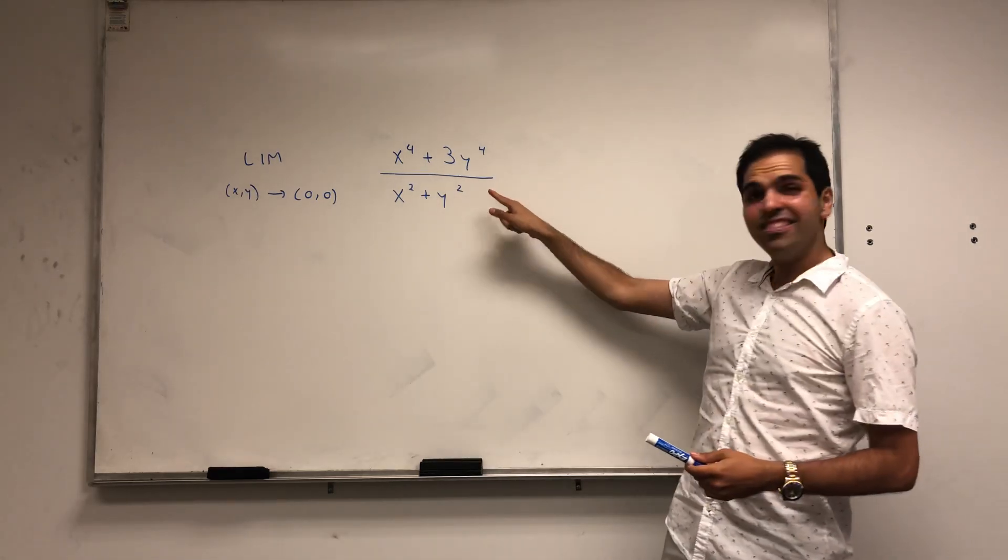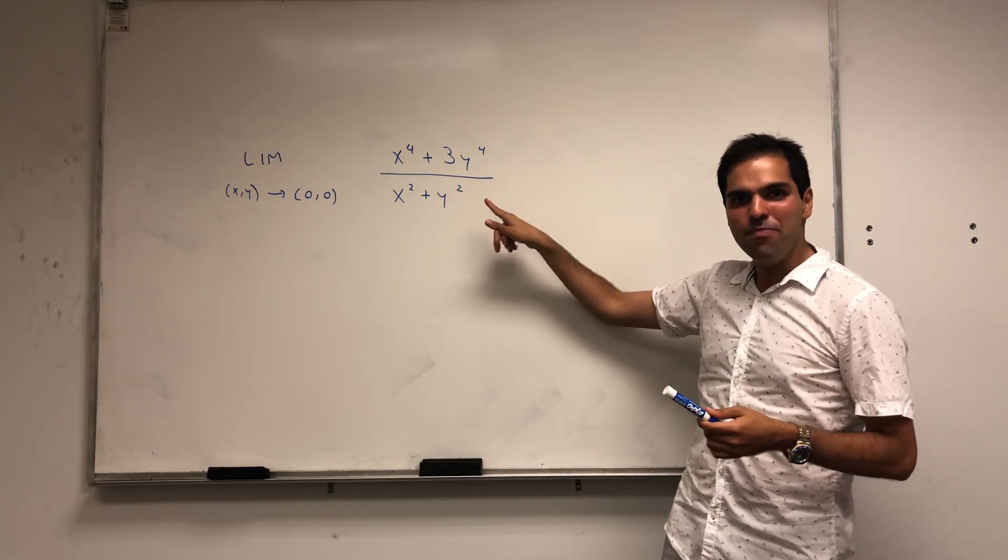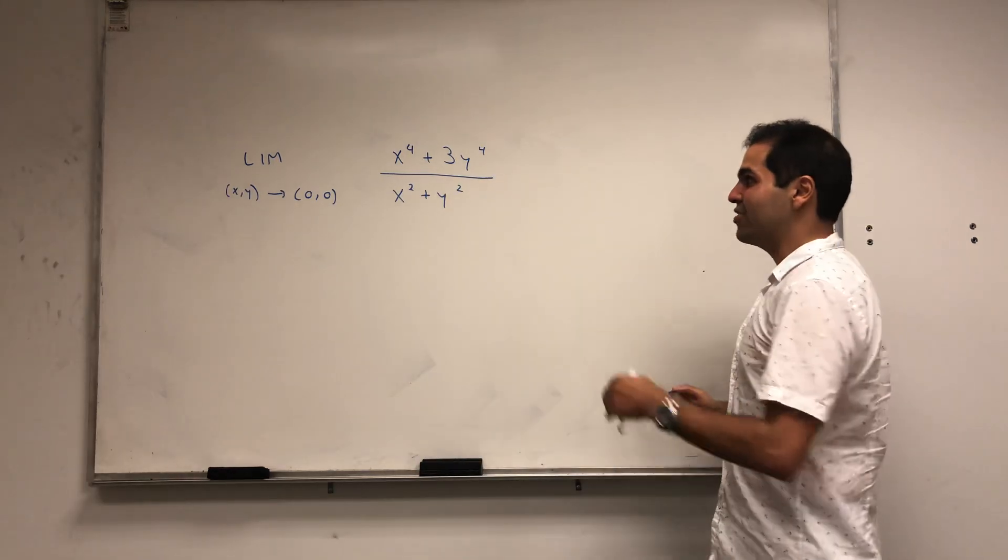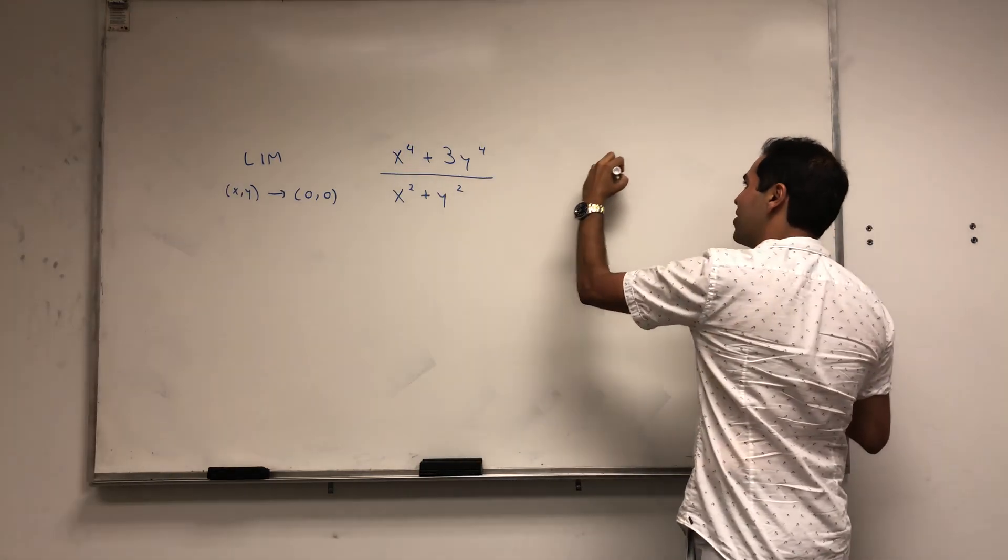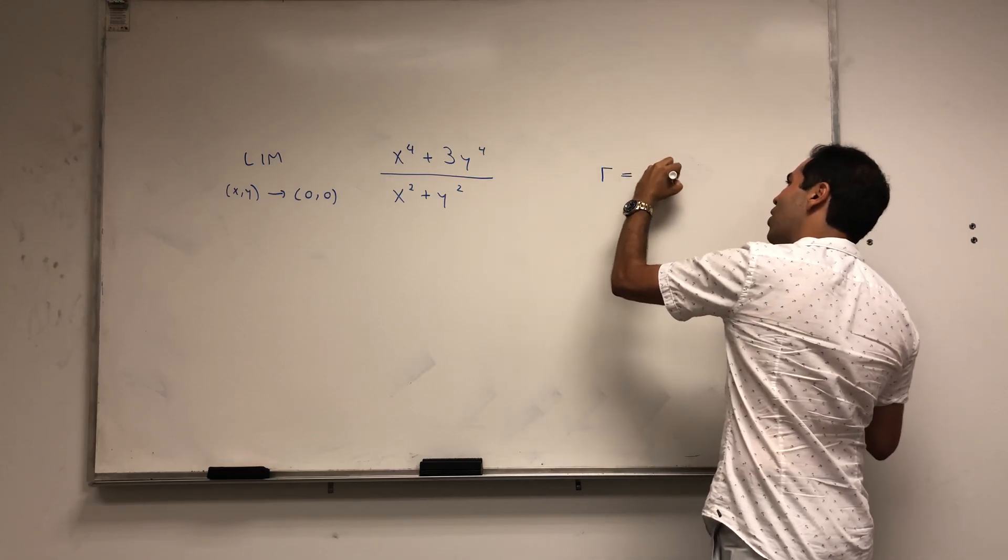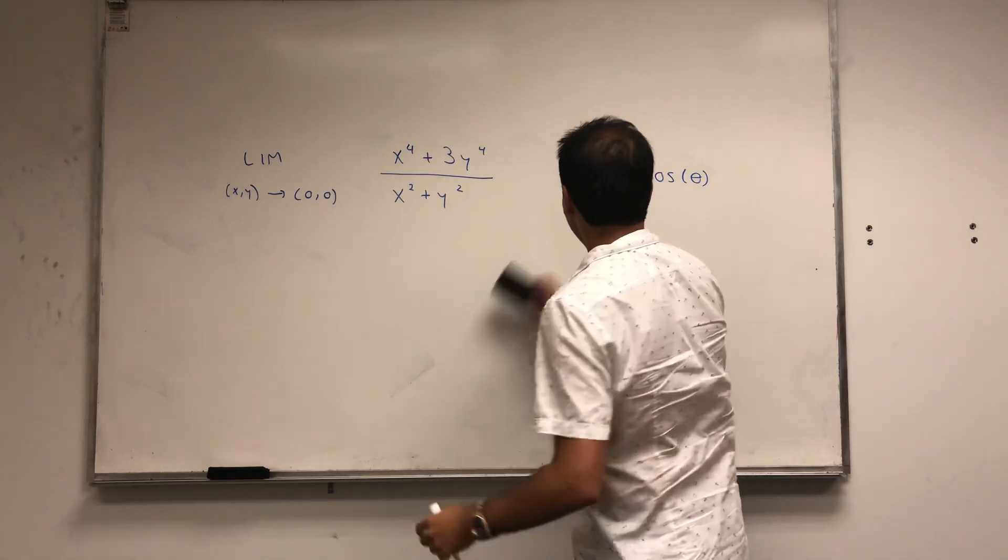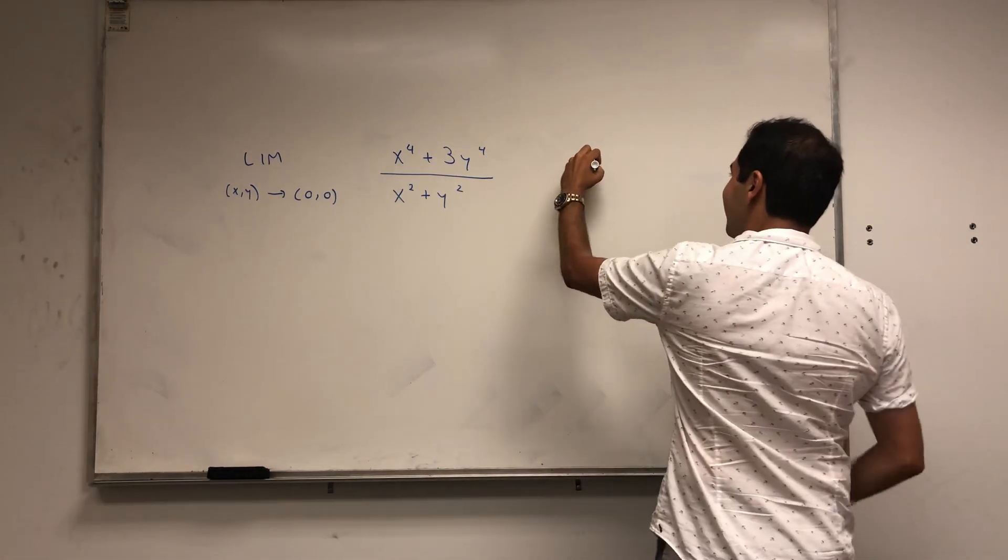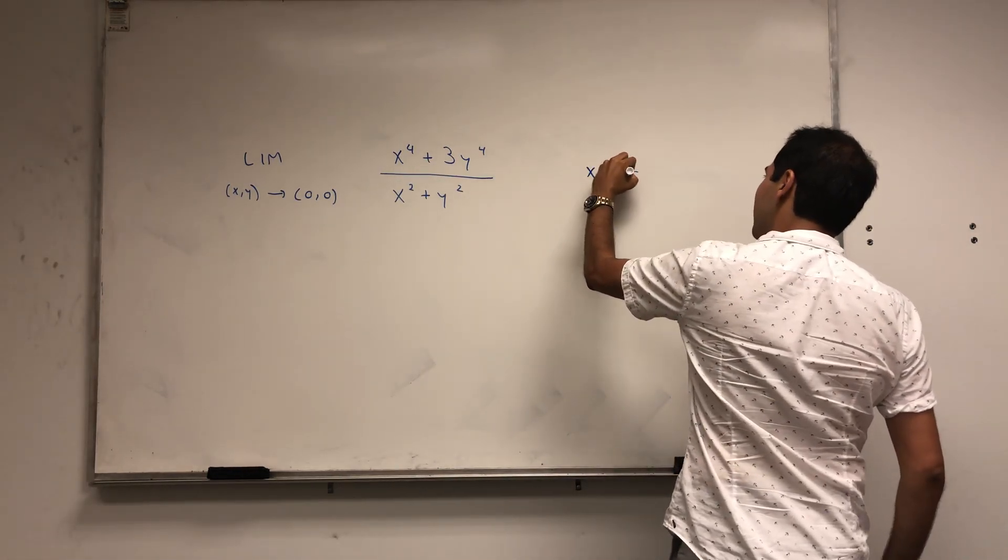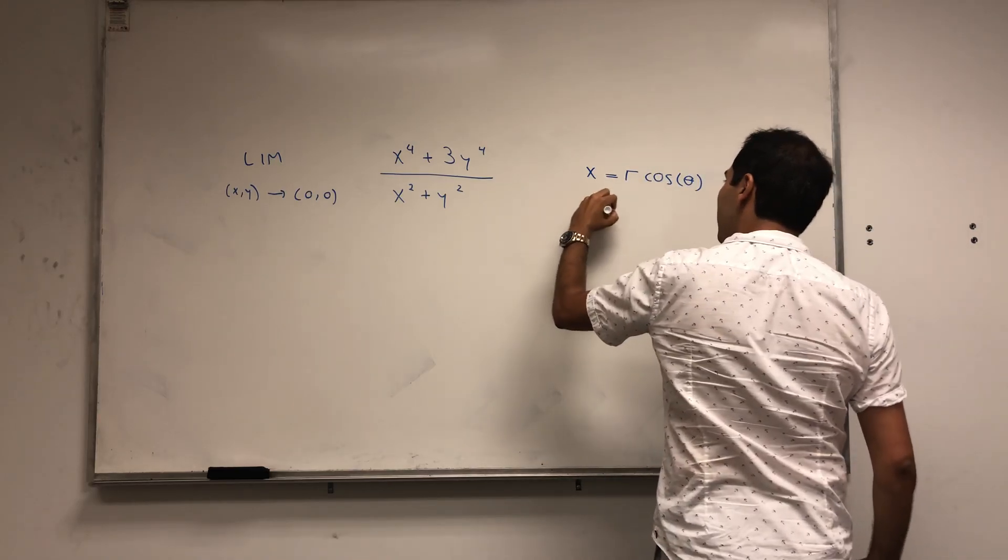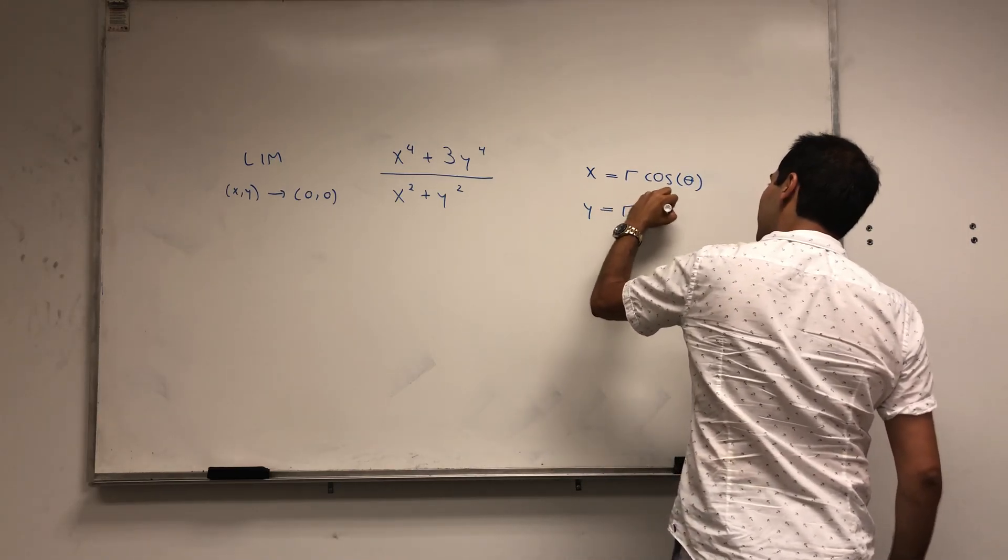It turns out exactly in this example, it's actually easier to use polar coordinates. So let's transform this into polar coordinates. So, sorry, x is r cosine of theta, and y is r sine of theta.